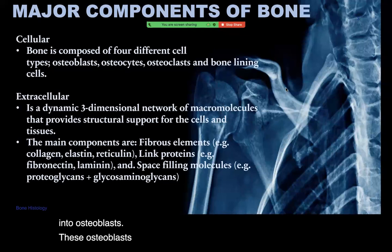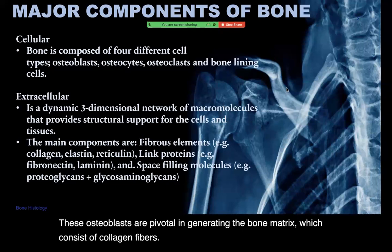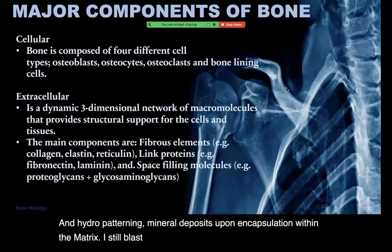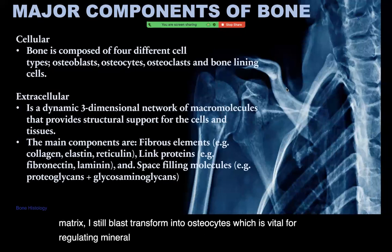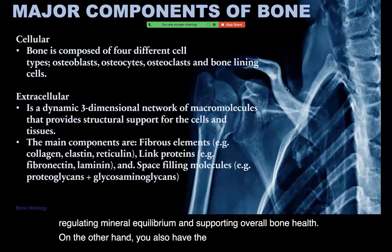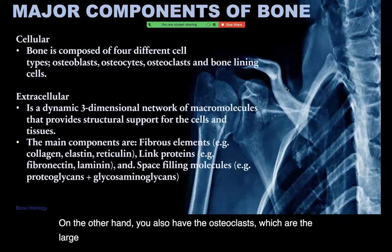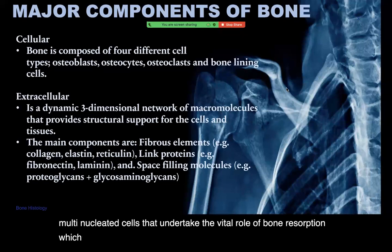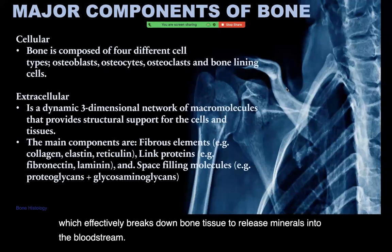These osteoblasts are pivotal in generating the bone matrix, which consists of collagen fibers and hydroxyapatite mineral deposits. Upon encapsulation within the matrix, osteoblasts transform into osteocytes, which are vital for regulating mineral equilibrium and supporting overall bone health. On the other hand, osteoclasts are large multi-nucleated cells that undertake the vital role of bone resorption, which effectively breaks down bone tissue to release minerals into the bloodstream.